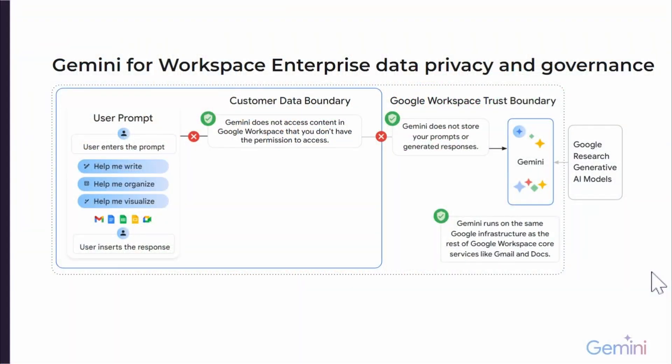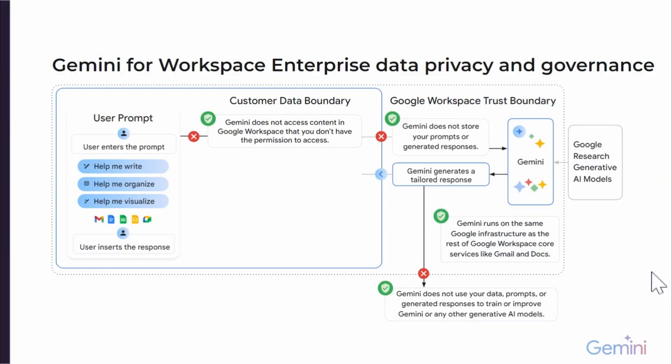If you don't have access to HR documents or senior management documents, then you're not going to have access to them if Gemini is implemented within your business. Gemini does not store any of the prompts or the generated responses. That's really important for both users to feel confident and comfortable using the system, and also for customers. Gemini then generates a tailored response based on what the customer has asked, the Gemini AI model, and the data that the user has access to. Gemini does not store the user's data, prompt, or response, and does not use it to train the AI model.